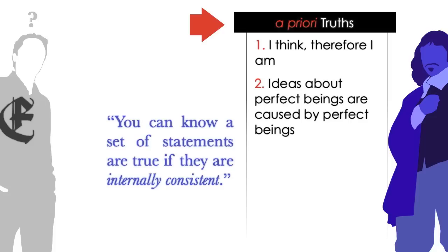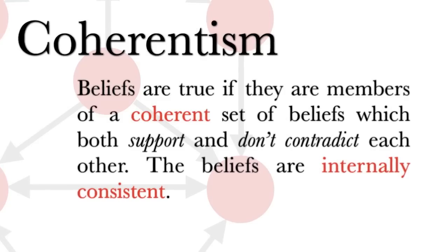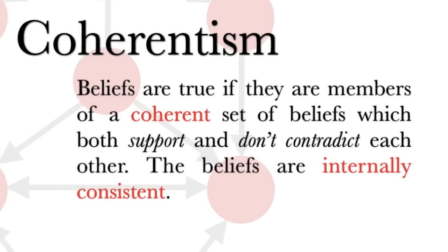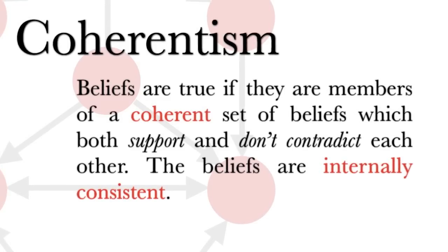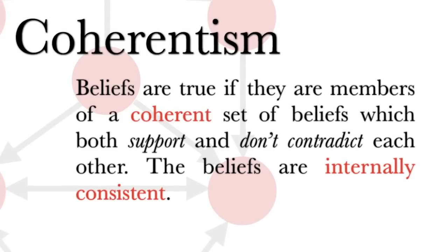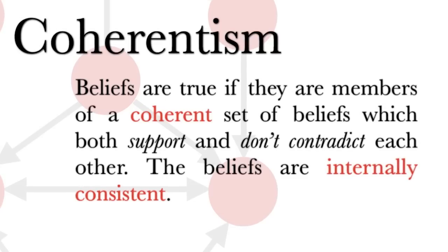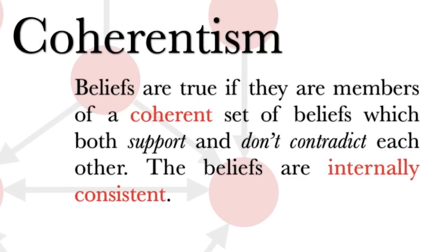A common answer is you can know a set of statements are true if they are internally consistent. Well, first that is an assumption. But let's entertain this principle and see how well it holds up. This type of epistemology is called coherentism—namely, beliefs are true if they are members of a coherent set of beliefs which both support and don't contradict each other.